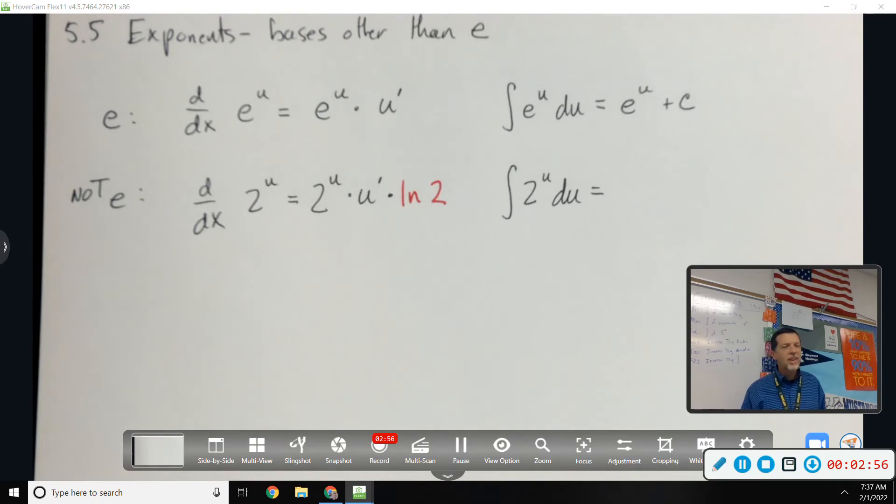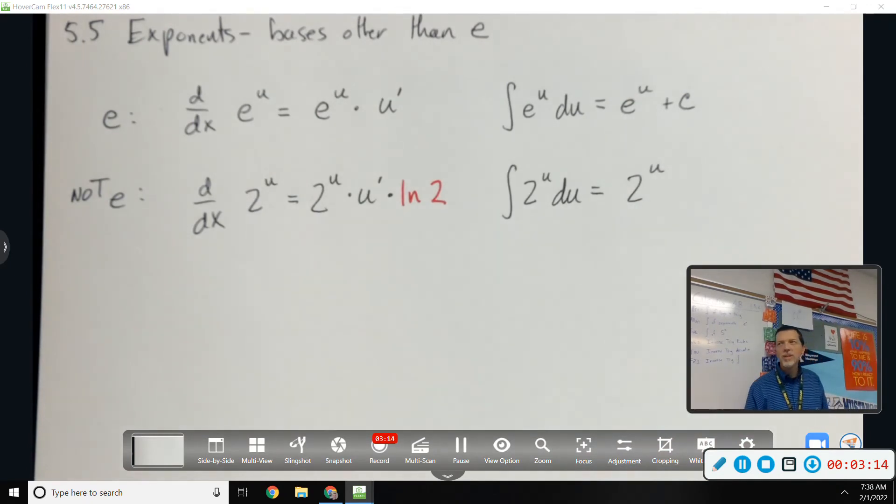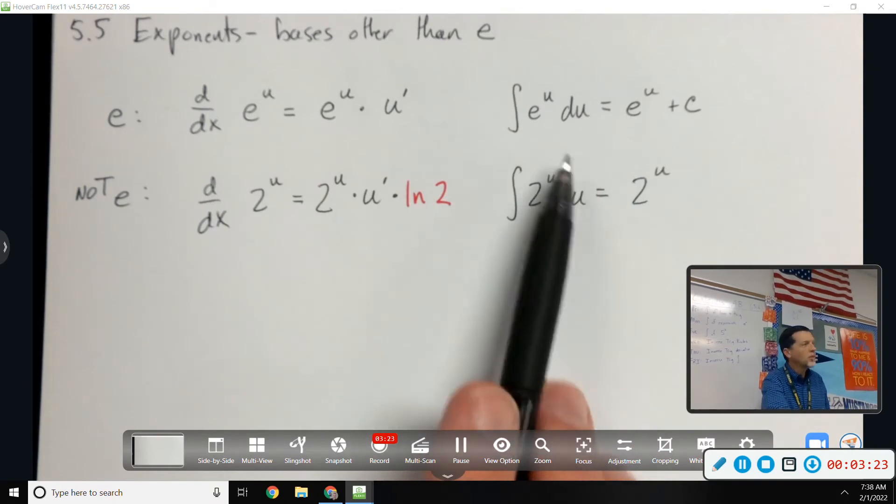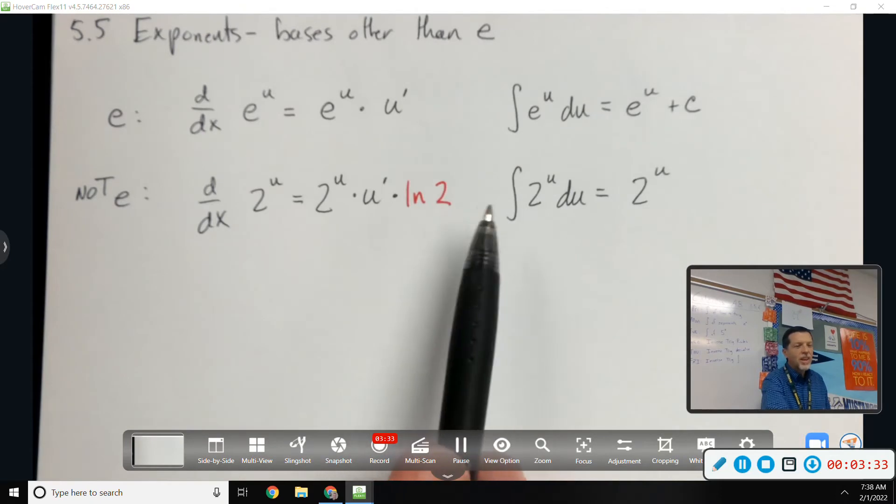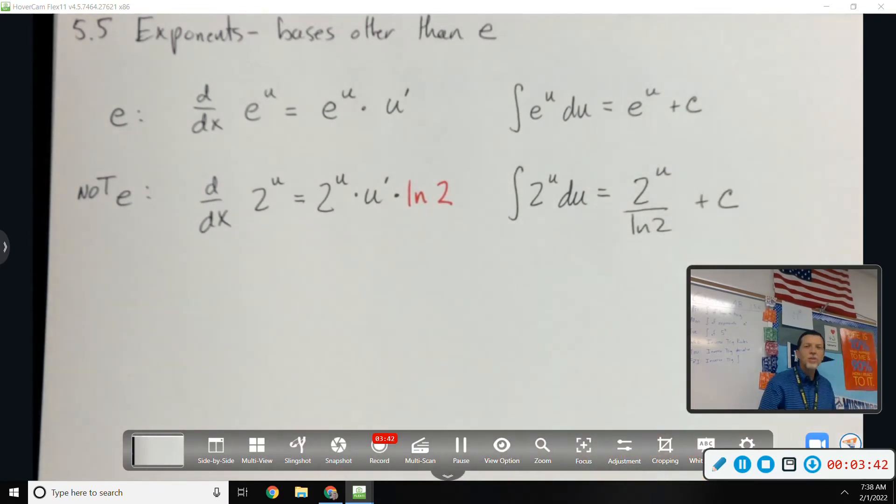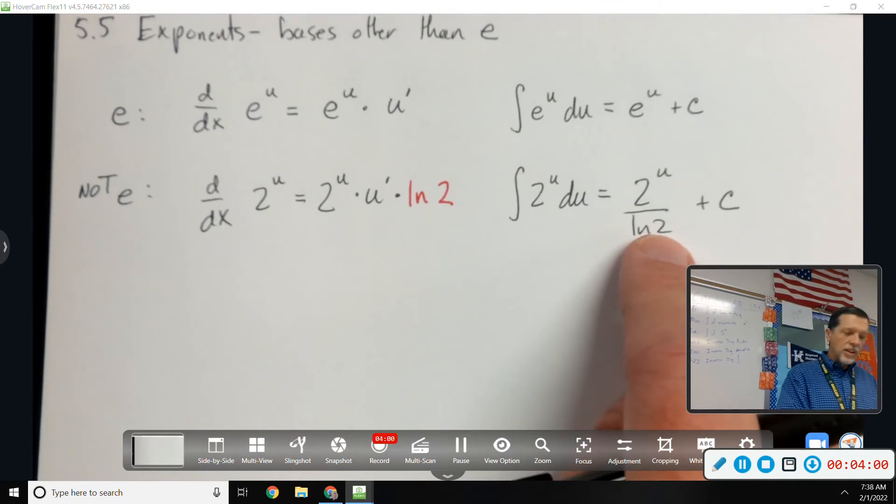Going backwards. Do you care to take a guess at what it would be? It's partly the same. 2 to the U. We'll have a plus C on the end in a moment. There's no U prime because we integrated. So I don't have to worry about U prime on this one. But this LN2 thing. When I took a derivative, I multiplied by natural log of 2. And the anti-derivative is going in reverse. We'll divide by natural log of 2. So the rules are the same as E, except that you either multiply by natural log of the base if you're taking a derivative. If you're taking an anti-derivative, that means you're going in reverse. You're doing the opposite. So you would divide by natural log of 2.